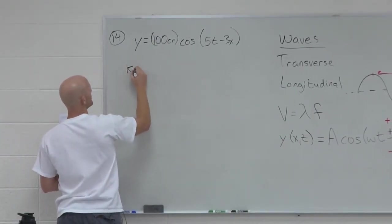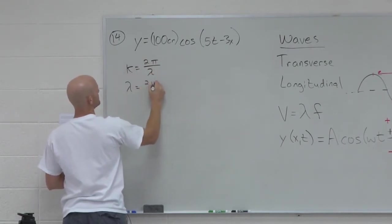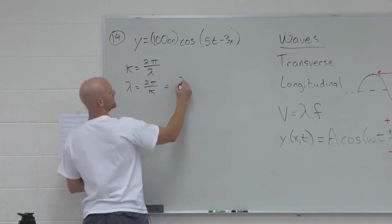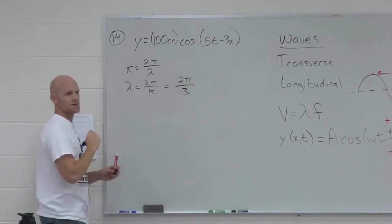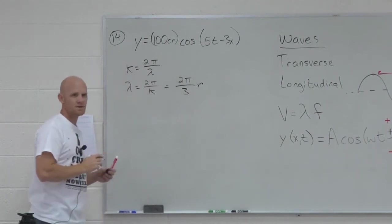What's the wavelength here going to be equal to? In this case, k equals 2π over the wavelength, so the wavelength equals 2π over k. In this case, what's that equal to? 2π over 3. That'll come out in meters for SI units.